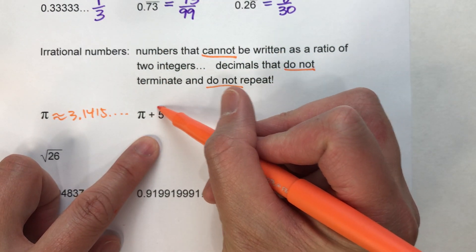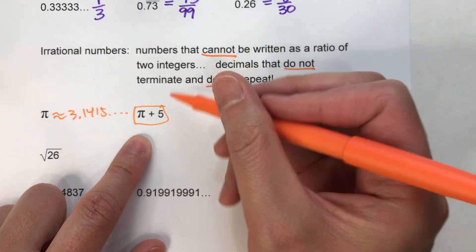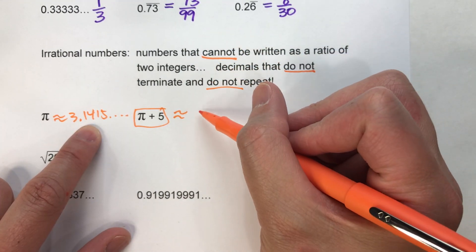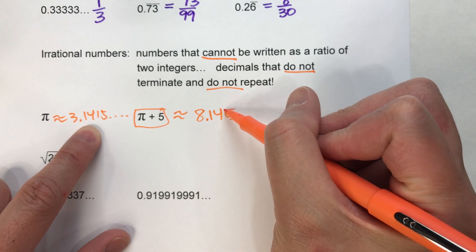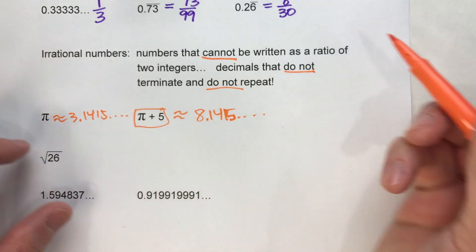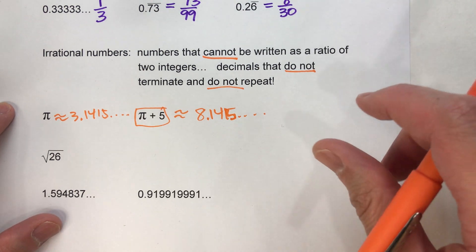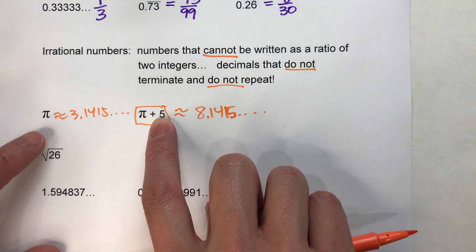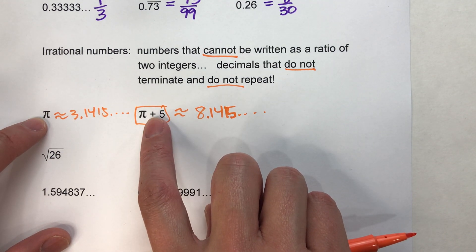And if we do something to pi—for example, we add 5 to it—it's still going to be irrational. Instead of 3.1415..., it's going to be 8.1415..., keep going forever and ever. Again, it won't end and it won't repeat.